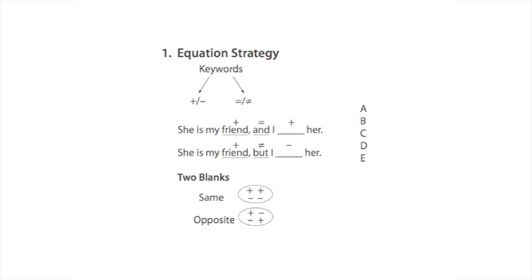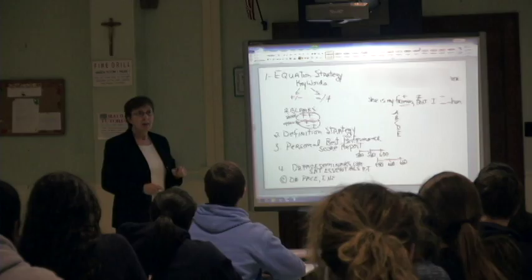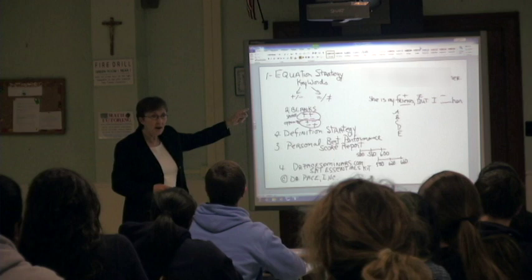Now how does that influence the word in the blank? Well that depends on the other key word. Is there an equal to or a shift word in the sentence? And is a logical equivalent. It means equal to. That means the word in the blank must be positive. Positive equals positive.